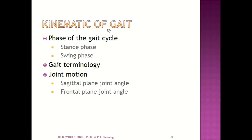First, we go to the kinematics of gait. In kinematics, there are the phases of the gait cycle — the stance phase and the swing phase. We have to assess the joint motion in the sagittal plane and the frontal plane above the joint angle.